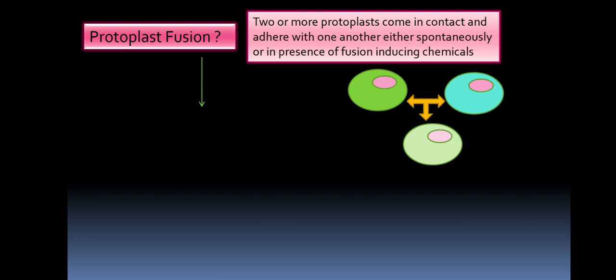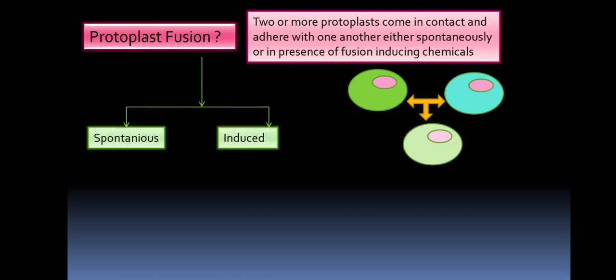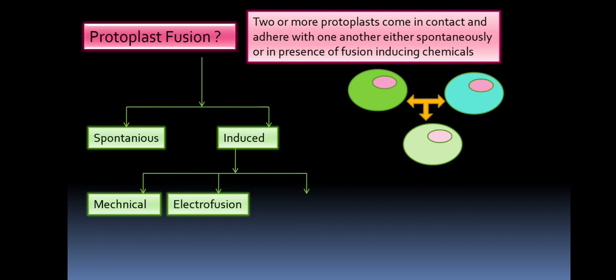This protoplast fusion, as you saw in the definition, can be spontaneous or induced. There are two major types - spontaneous fusion and induced fusion. Spontaneous happens on its own but it is quite difficult, so it is induced in the laboratory. Induced fusion is of different types. Three major types are mentioned here - mechanically induced protoplast fusion, electrofusion where electric current is used but it is quite costly, and chemofusion which is very common and easily performed in almost every laboratory. Here simply chemicals are used, and these chemicals induce the fusion of protoplasts.